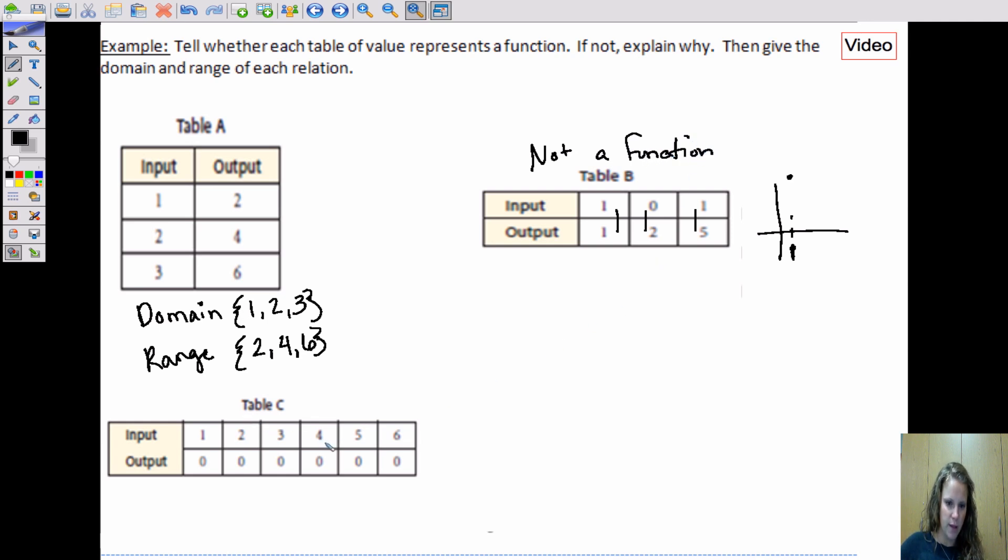And then finally, table three, all of our inputs go to zero, which means we just have a horizontal line at zero. One is zero, two is zero, three is zero, four is zero, five is zero, six is zero.